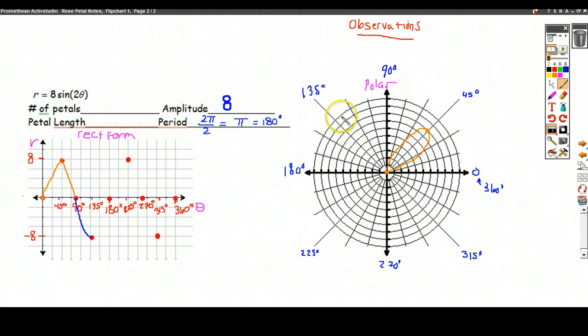As we rotate from 90 to 135, we're walking backwards because R is negative, which means all our points are going to be in this section here. And when we rotate at 135 degrees, we're facing this direction, but we're going to take 8 steps backwards.